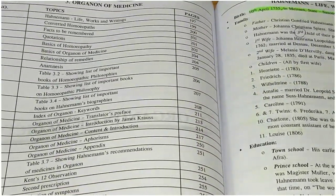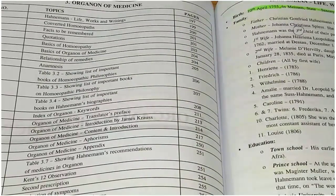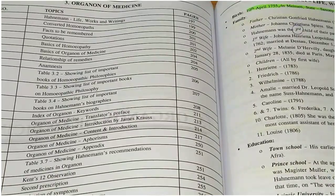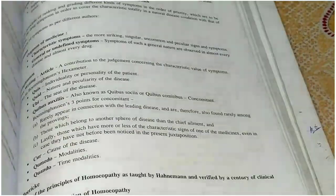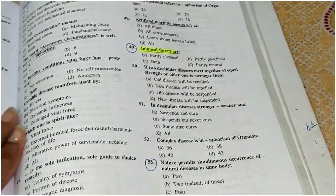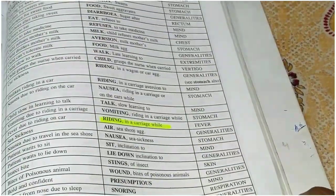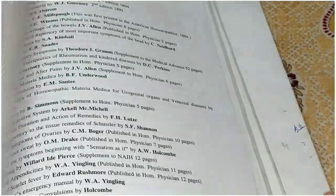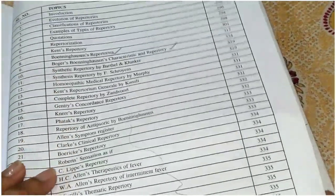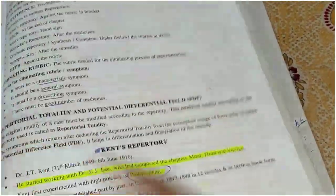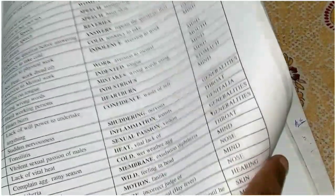There is Hahnemann's life history, converted homeopaths, facts to be remembered, quotations, basics of homeopathy, and basics of the Organon of Medicine, so you will get a lot of points on the Organon. I like this book — there are lots of MCQs you can read and solve. At the last section you have the repertory, and you can see how many important points are related to it.